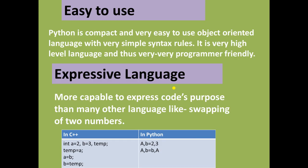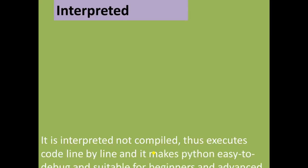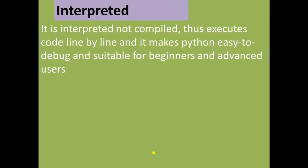Expressive language: code is easy to express compared to other languages. For example, for swapping in C++, you write: int a = 2, b = 3, temp; temp = a; a = b; b = temp. But in Python you simply write: a, b = 2, 3 and then a, b = b, a — so a gets 2 and b gets 3.